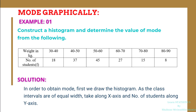Solution. In order to obtain mode, first we draw the histogram. There are four methods of drawing a histogram which we have discussed in previous lectures on the Learn Statistics platform. In our example, classes are of equal width — each class has width 10 — so we are going to use the first method. In such a case, take the classes along the x-axis and the number of students along the y-axis to construct the histogram.